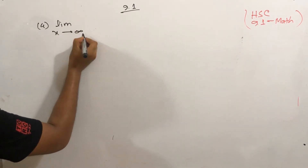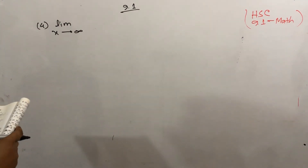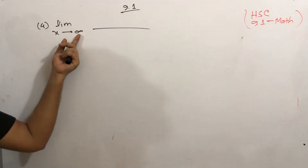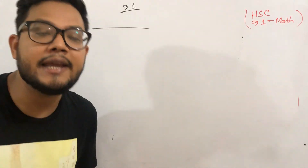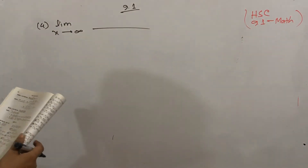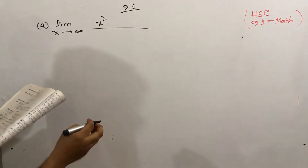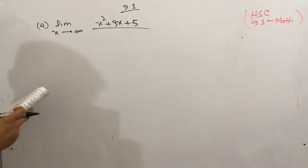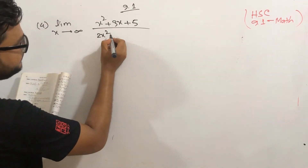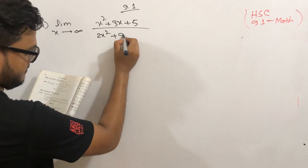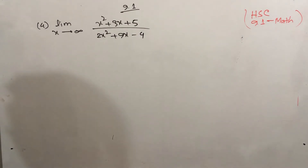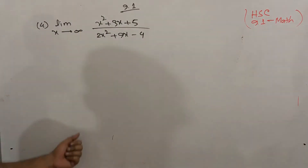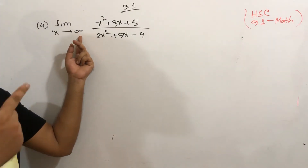Infinity is very small. Let's see — one thing is the infinity type. Limit x tends to infinity. A type of math is very small. Now let's see: x squared plus 3x plus 5, divided by 2x squared plus 9x minus 4. x tends to infinity.